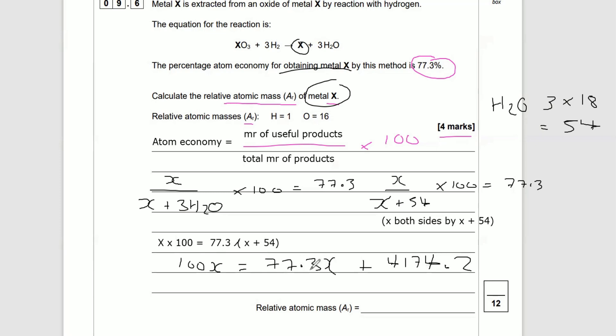22.7X, which is equal to 4174.2. So I just need to find out how much each X is worth, so I'm going to divide 4174.2 by 22.7.